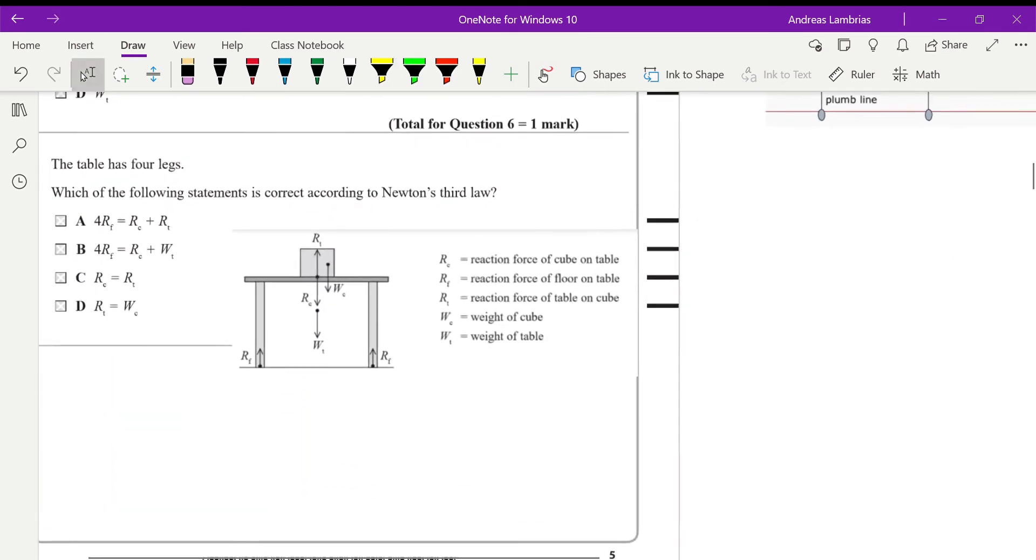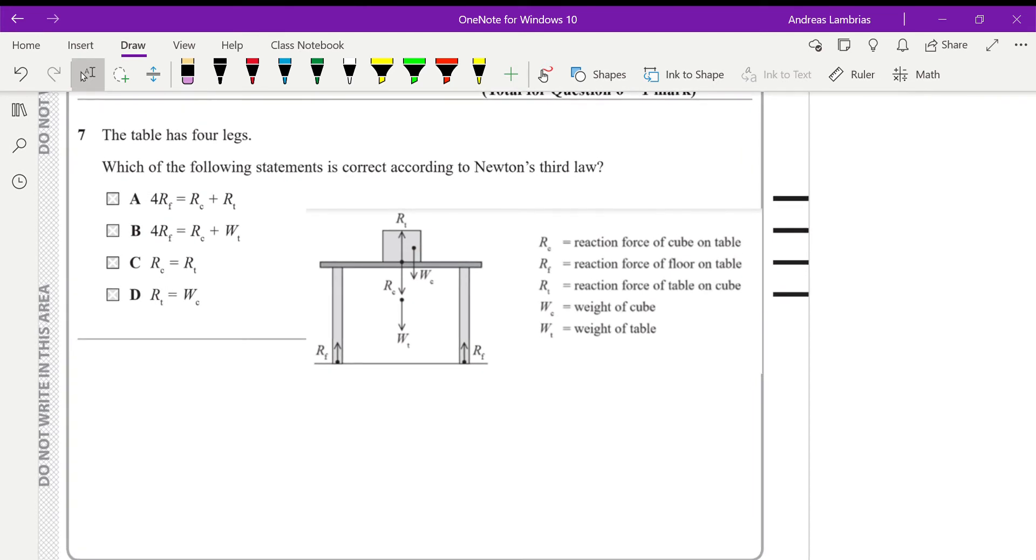The next question has to do with the same case. The table has four legs and we need to find out which of the following statement is correct according to Newton's third law. So just a reminder that the pair of forces caused by Newton's third law, the action-reaction, have to have the same magnitude. They need to be acting in opposite directions. And the one that students usually get confused is that these two forces have to be acting in different objects. They shouldn't be on the same object. And also this pair of forces should be of the same type. So they have to be both contact forces or non-contact forces.